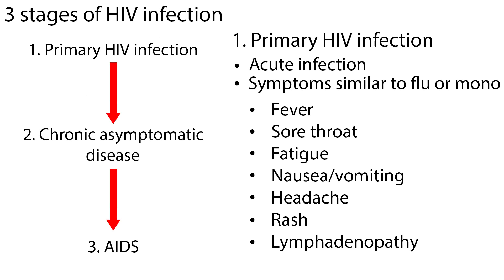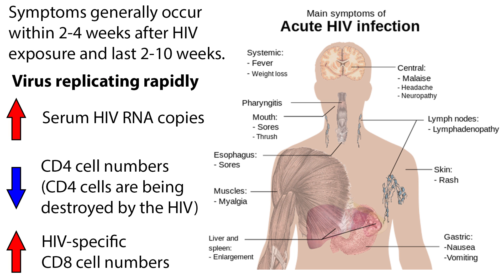The primary or acute phase is characterized by symptoms similar to the flu or mononucleosis, such as fever, sore throat, fatigue, nausea and vomiting, headache, rash, or lymphadenopathy. These symptoms generally occur within 2-4 weeks after HIV exposure and last 2-10 weeks.